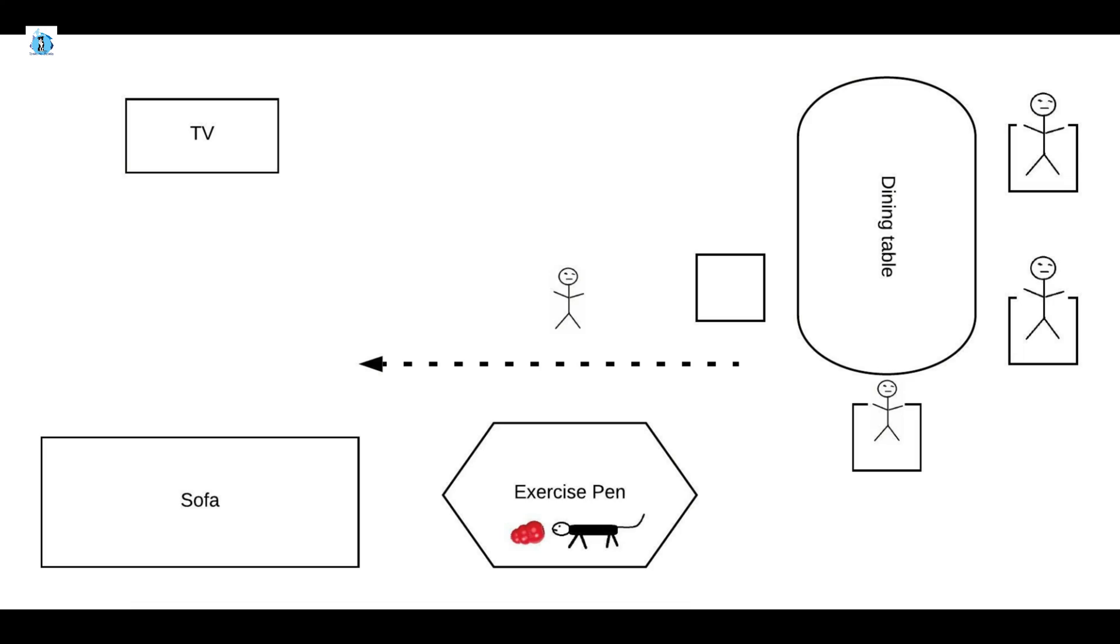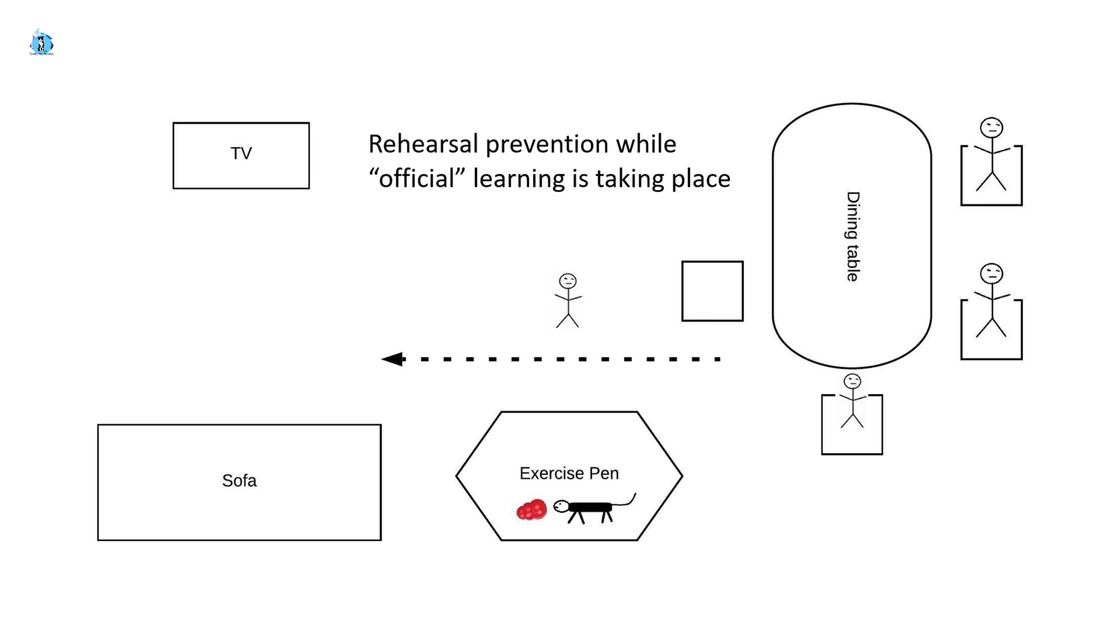So during these learning stages, it is totally fine, for example, to use an exercise pen. This is especially important if sometimes you don't have the possibility to manipulate the environment in a way that you are generating the behavior that you deem more appropriate.